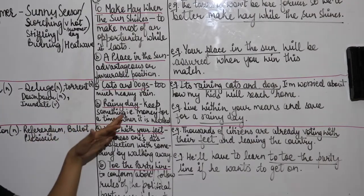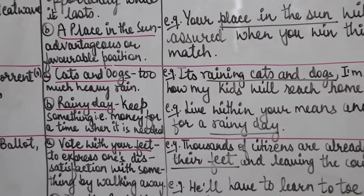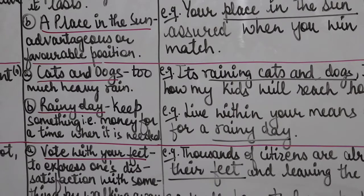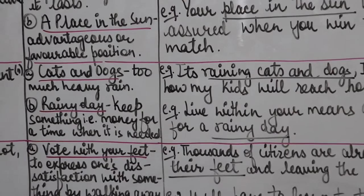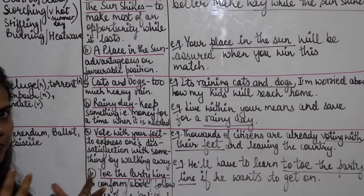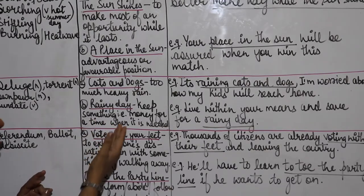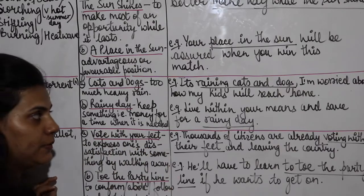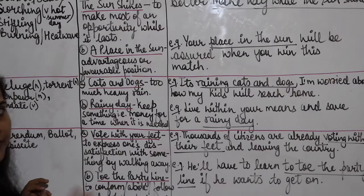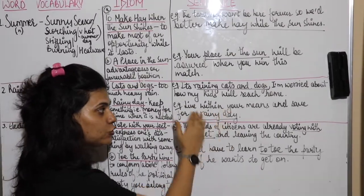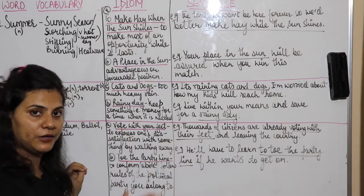The next idiom used with rain is 'rainy day.' We use this idiom to mean keeping something — that is, money — for a time when it is actually needed. When we want to make someone cautious and advise them to save money for a time of need, we say 'save for a rainy day.' The example sentence is: 'Live within your means and save for a rainy day' — spend within your limits and keep money saved for when you truly need it.